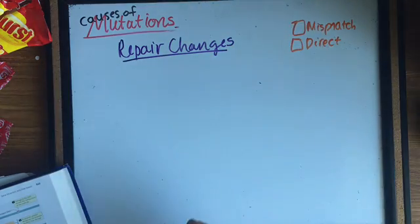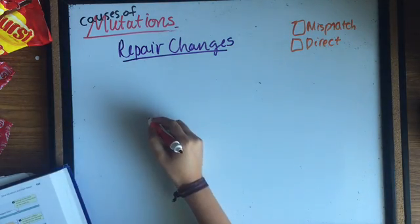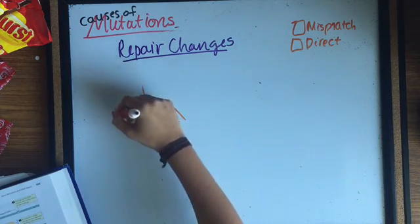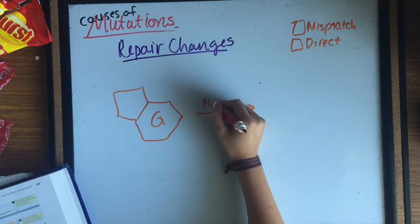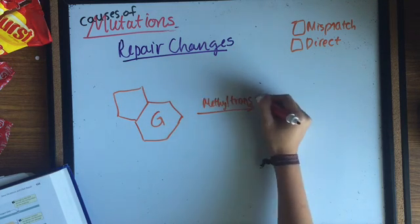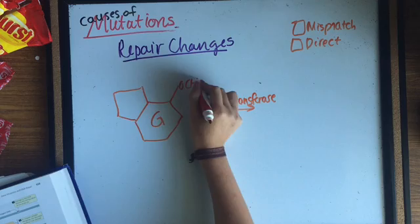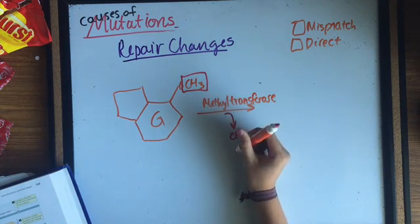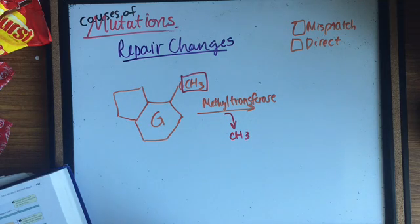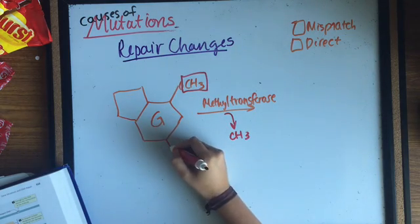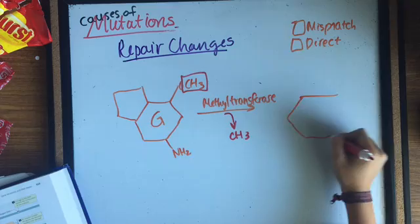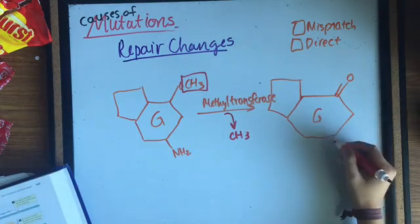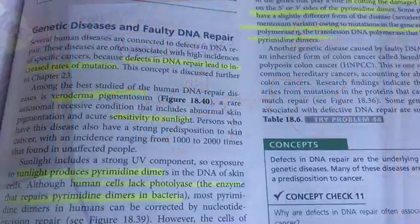Another repair mechanism is direct repair that converts altered bases back to its original structure. This happens in the photoreactivation of UV-induced pyrimidine dimers, where some eukaryotes possess an enzyme called photolyase, which uses energy captured from light to break the covalent bonds that link the pyrimidines in a dimer. Another example is O6-methylguanine losing its methyl group with methyltransferase and going back to its original guanine structure.